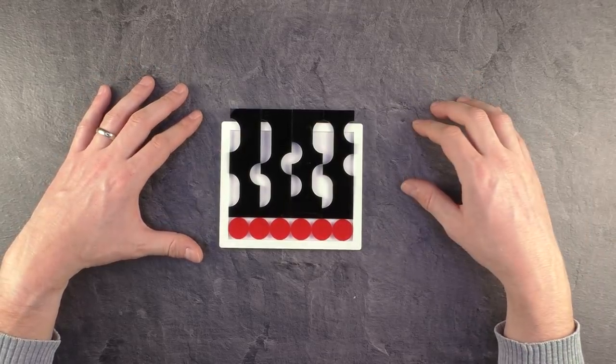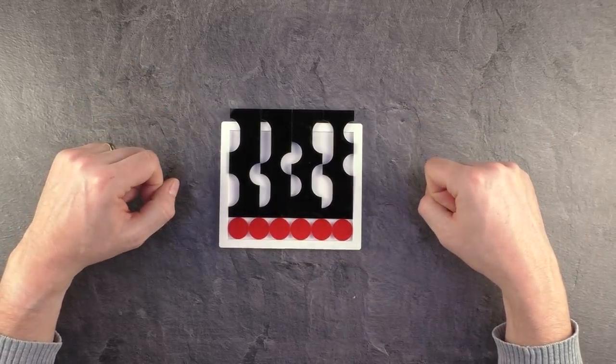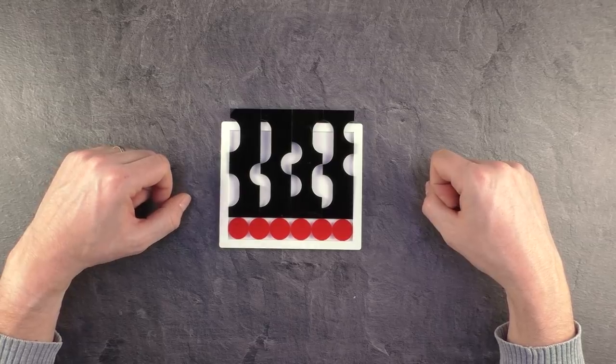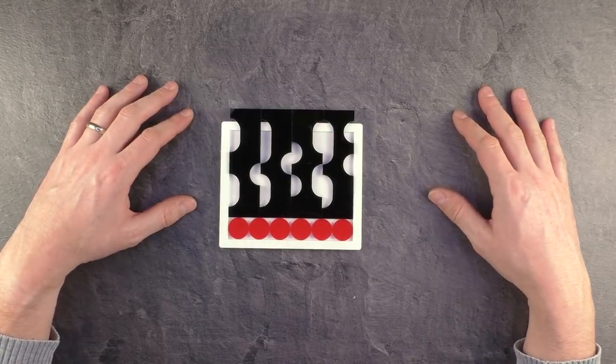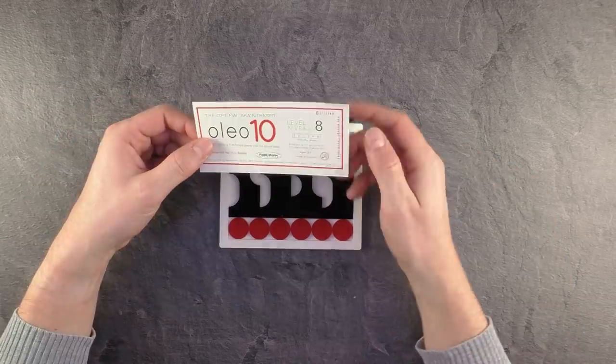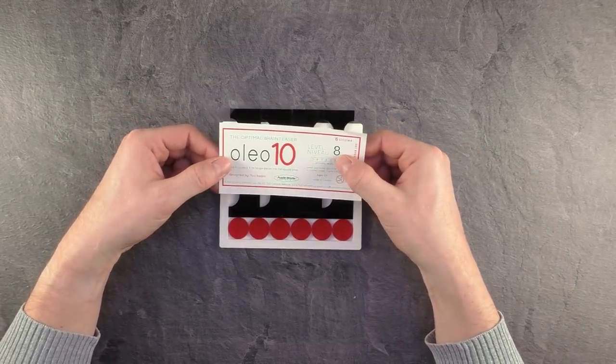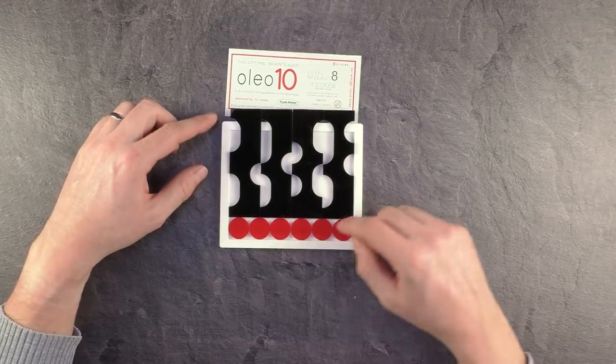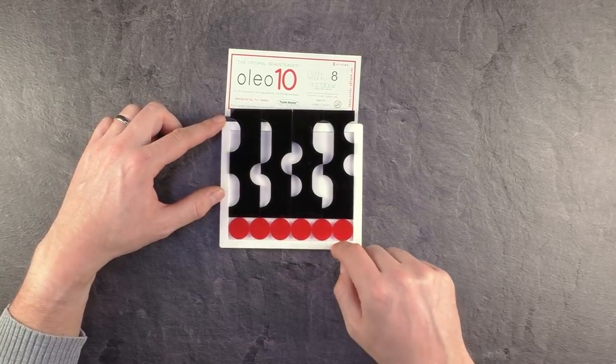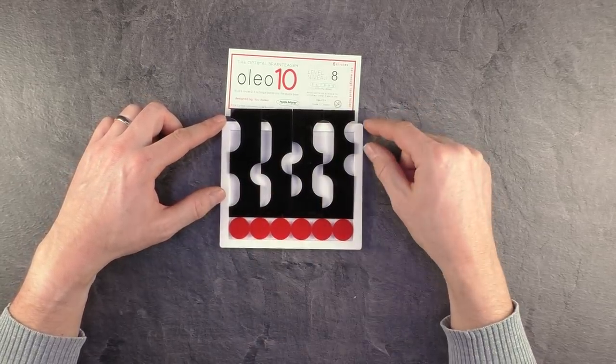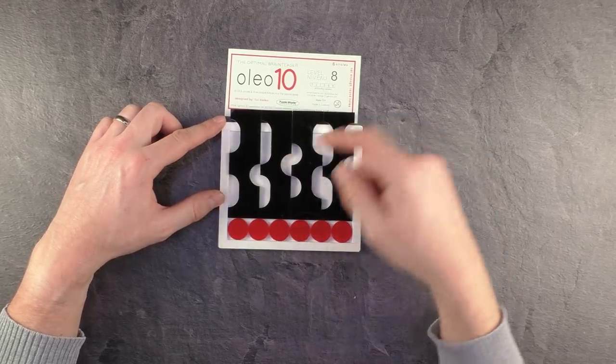Yes, it belongs to the packing puzzle series. The very clever packing puzzle series designed by Jua Saka and manufactured by Puzzle Master Canada. This is the newest puzzle of the series called Oleo 10. It's a level 8 puzzle and the target is to fit these six red circles and these four black squared pieces into this white frame.